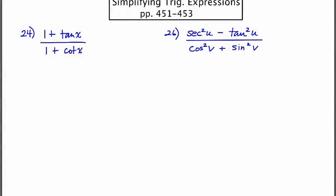In number 24, we have one plus tan x over one plus cotan x. And my strategy to simplify this problem is to use a useful form of one. And the useful form of one that I'm going to use, I have a few options here, but the one that I'm going to use is tan x over tan x.